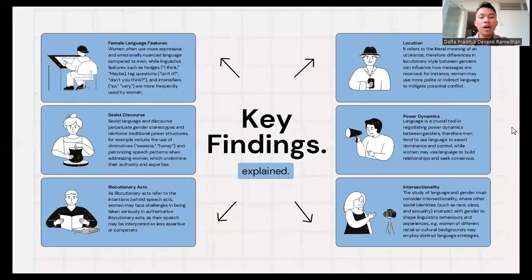Here are the key findings after analyzing all of the discourse that covered within the topics. First is female language features: women often use more expressive and emotionally nuanced language compared to men, while linguistic features such as hedges, like 'I think,' 'maybe,' tag questions, 'isn't it,' 'don't you think,' and intensifiers 'so,' 'very' are more frequently used by women.